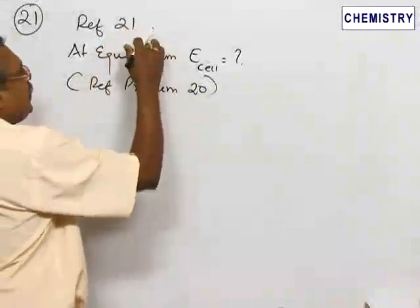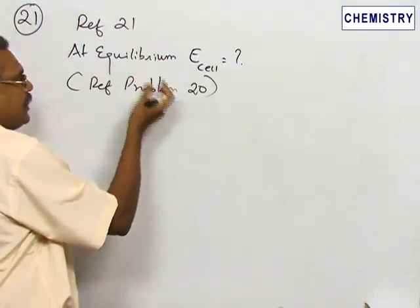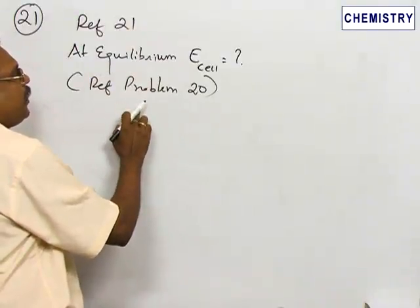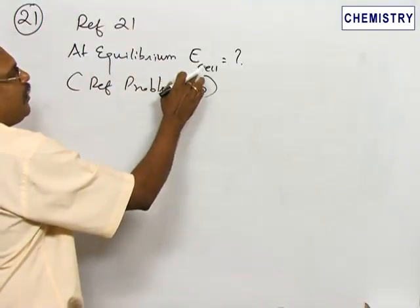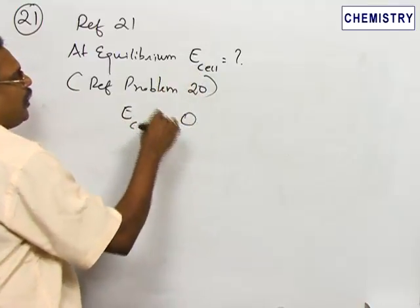Refer to problem number 21. This is a continuation of the previous problem. Here we are going to calculate, after attainment of equilibrium, what would be the cell EMF. At equilibrium, E_cell must equal 0 because the reaction quotient portion will be 0 and only the standard EMF will act.